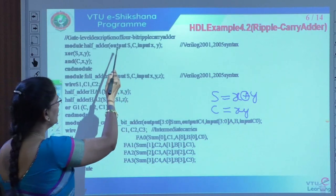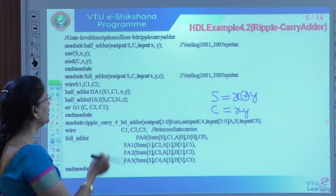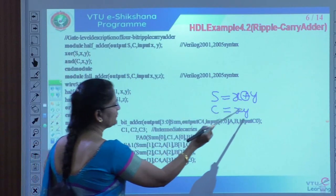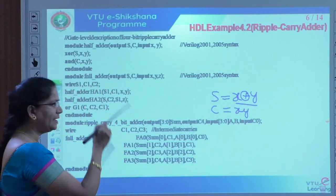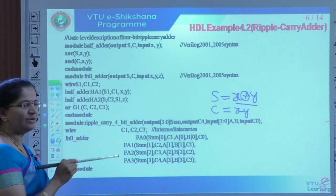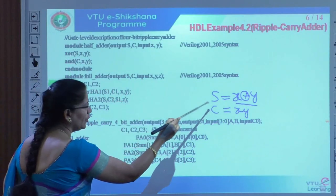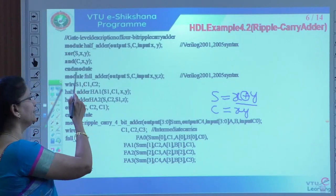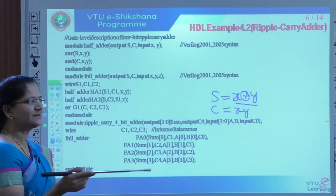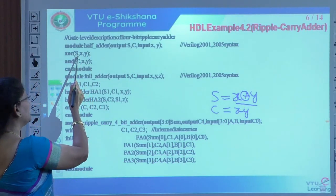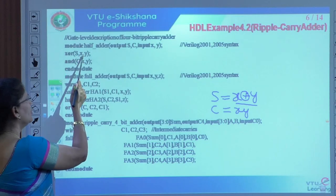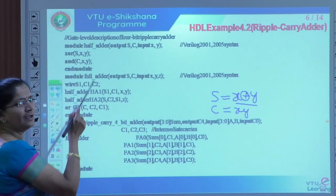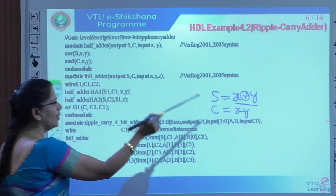We have to specify that — I have given input and output directly, so no need to specify again. I can call the predefined gate primitives. Whenever you use any gate primitives, you must specify the output first, then followed by the inputs. Sum is performing the XOR operation: s, x, y — ending with a semicolon. Same thing for carry — carry will be the output, and inputs are x and y.